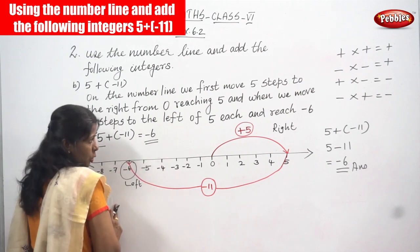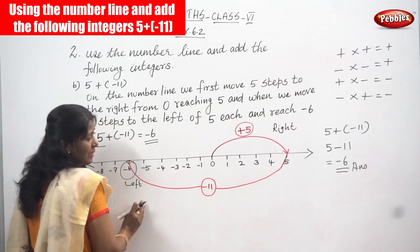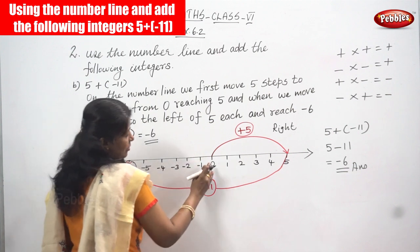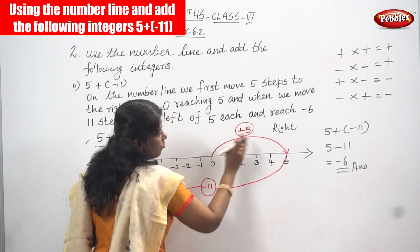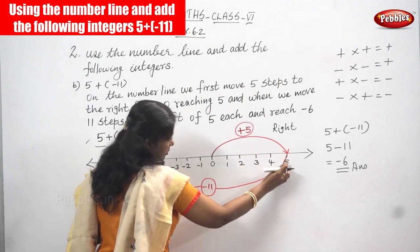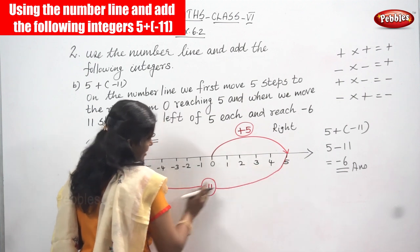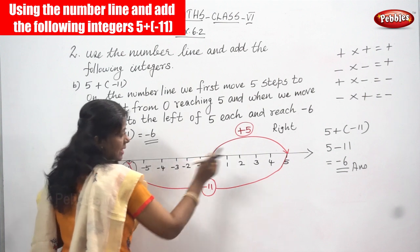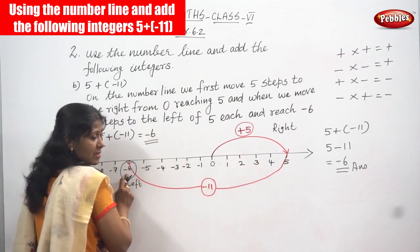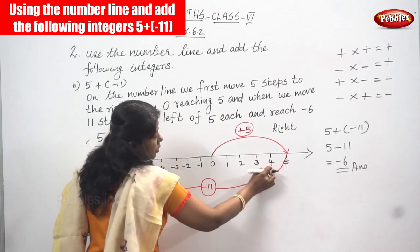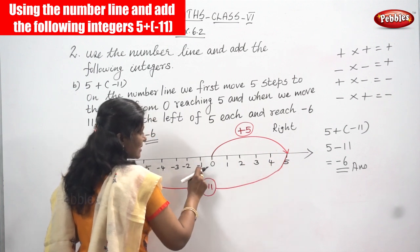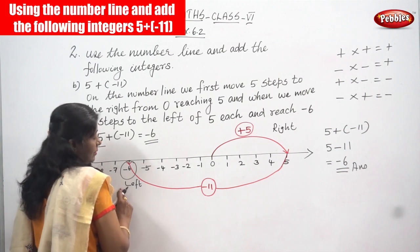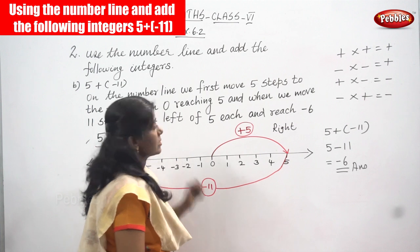Minus 6 is the correct answer. So for 5 + (-11), the answer is minus 6. On the number line: from zero, move five steps to the right to reach 5, then from 5 move 11 steps to the left — counting one through eleven — and you reach minus 6. The answer is minus 6. I think you understand the first sum very clearly.